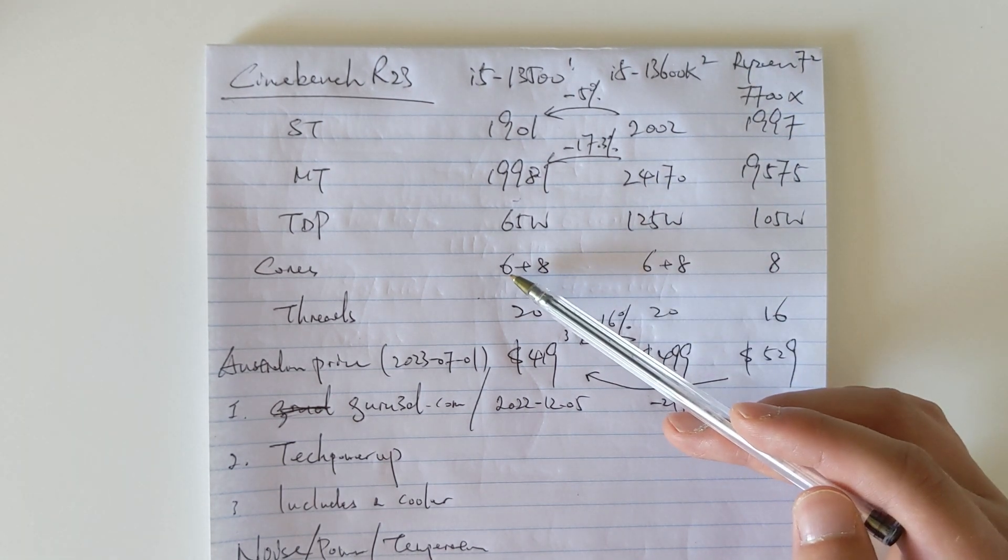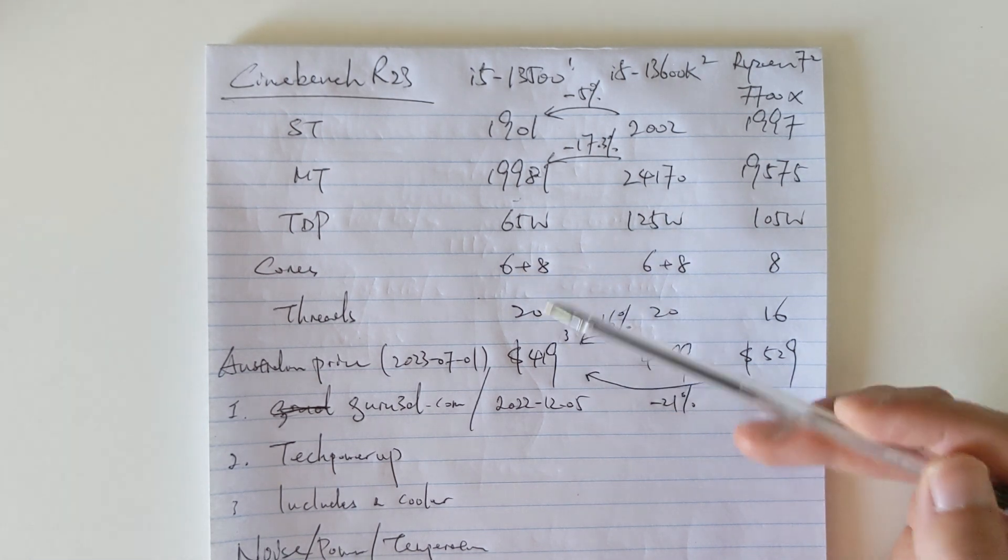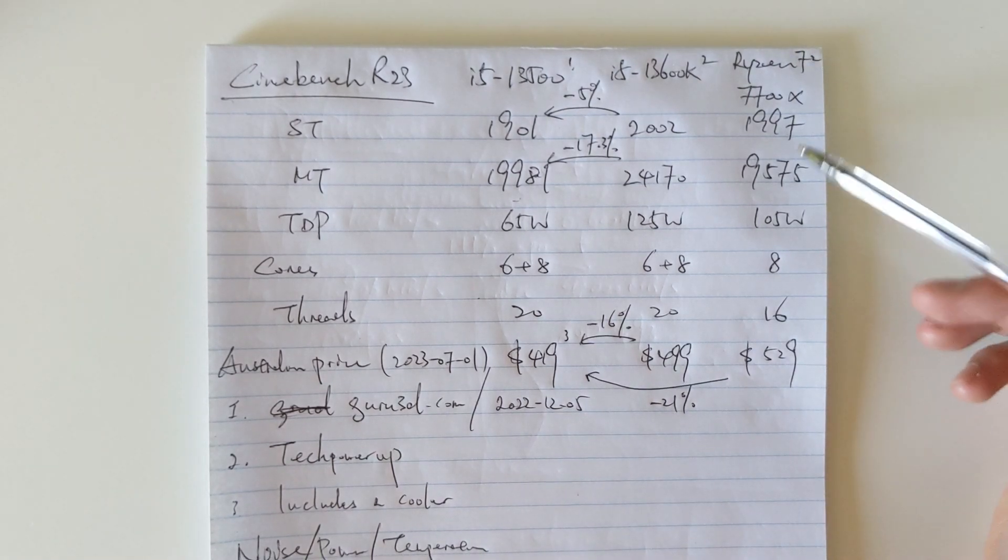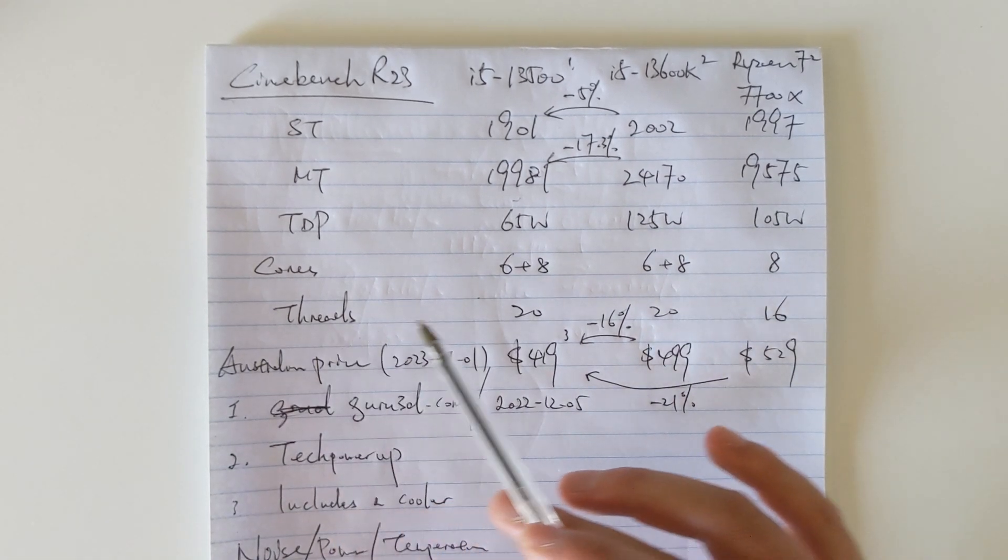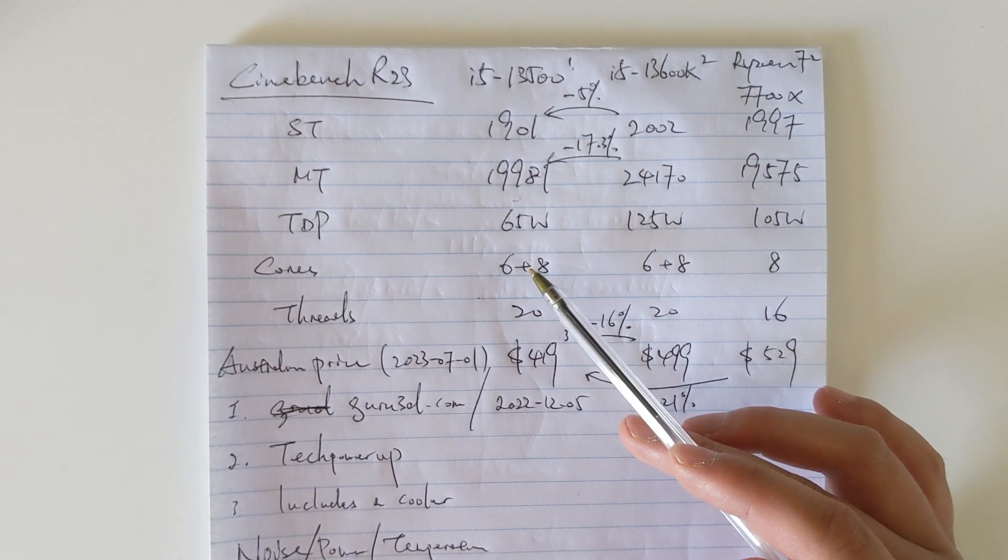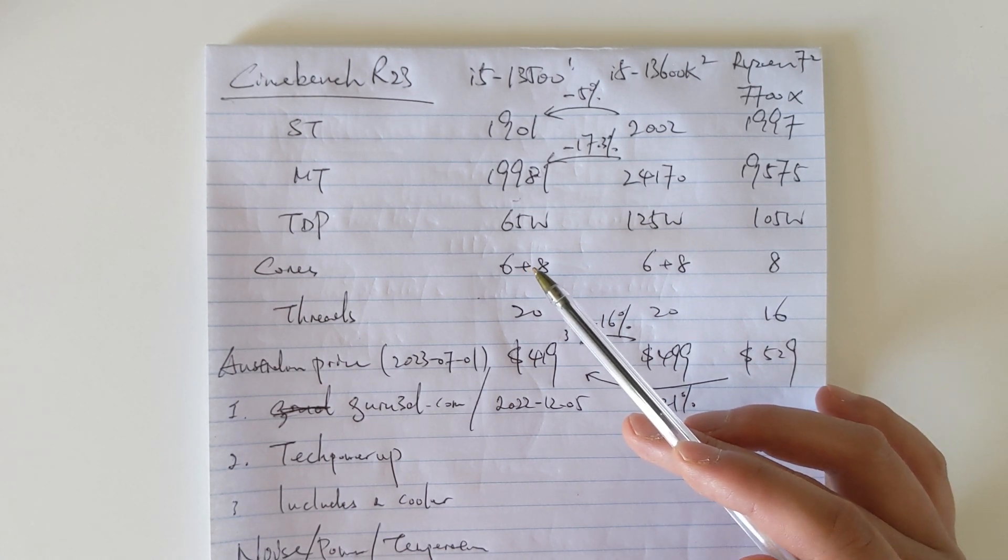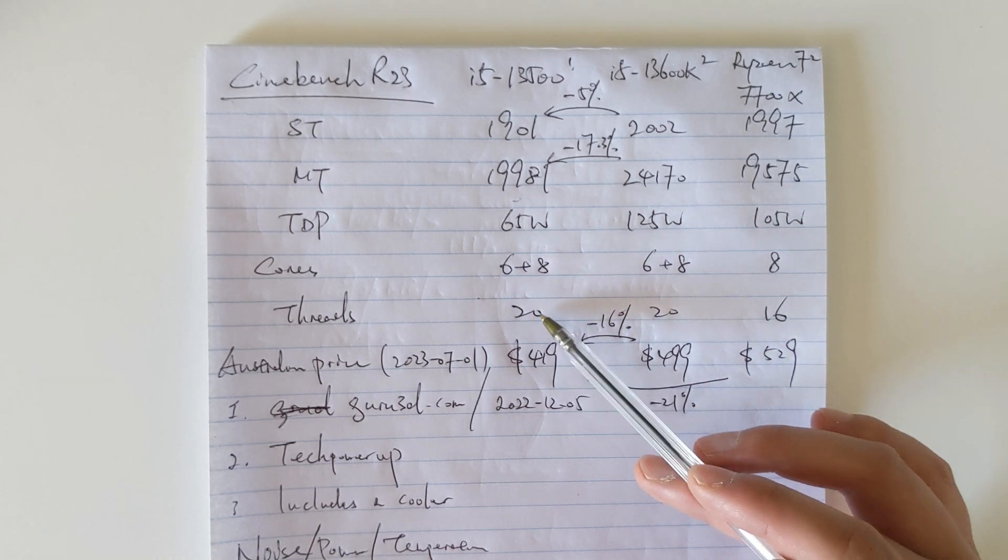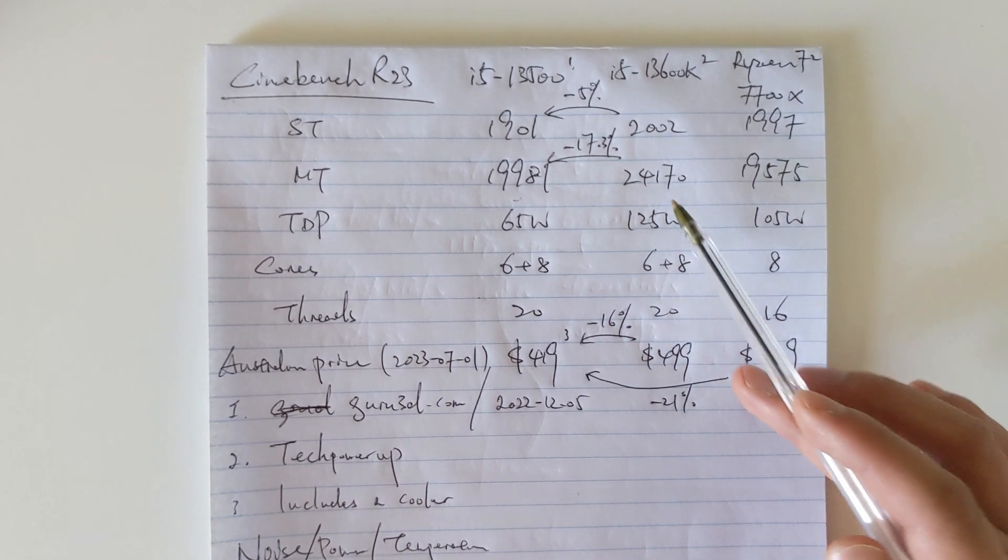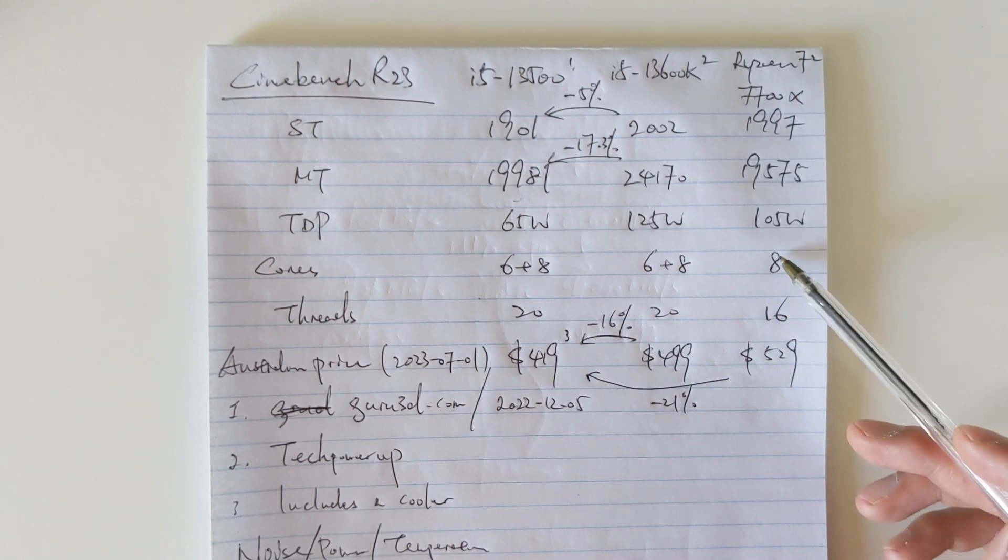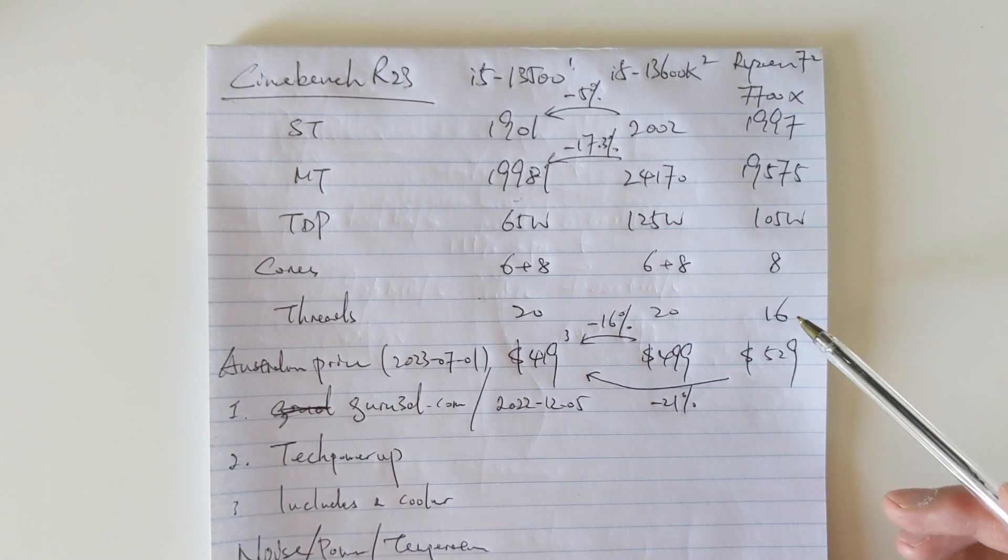If you compare with the cores, the 13500 has the same configuration as 13600K—basically six performance cores, like big cores, plus eight efficient cores. With the Ryzen, just conventional cores, like eight big cores. In terms of threads, the performance cores each have two threads, so six times two is twelve, plus eight, equals twenty threads, same with 13600K. With the Ryzen, that's eight times two, sixteen threads.